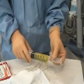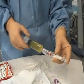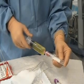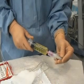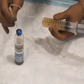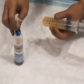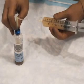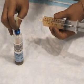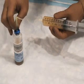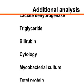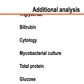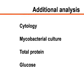Aspirated fluid should be immediately placed into appropriate specimen tubes. A tube without additives should be sent for chemical analysis of albumin and total protein concentrations. An EDTA tube should be sent for evaluation of cell count and differential. Blood culture bottles should be inoculated at the bedside using aseptic technique if spontaneous bacterial peritonitis or other infection is a diagnostic concern. Specimens for other tests, such as cytology or mycobacterial culture, may be sent depending on the clinical scenario.